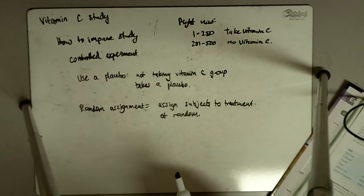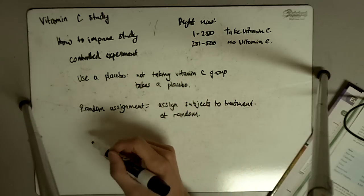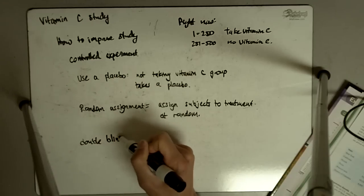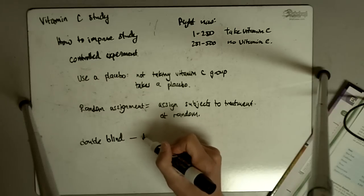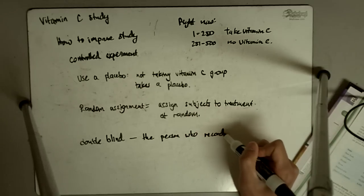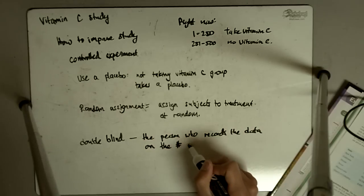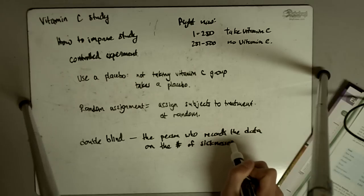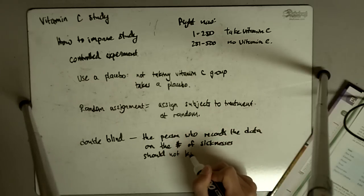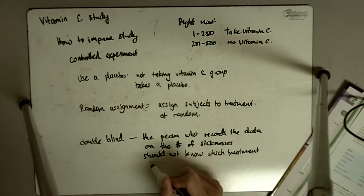So random assignment will help out. And so placebo makes it blind. And then it could be possible to make the experiment double blind, so that the person who records the data on the number of sicknesses should not know whether the person is taking vitamin C or not. Should not know which treatment is being used.